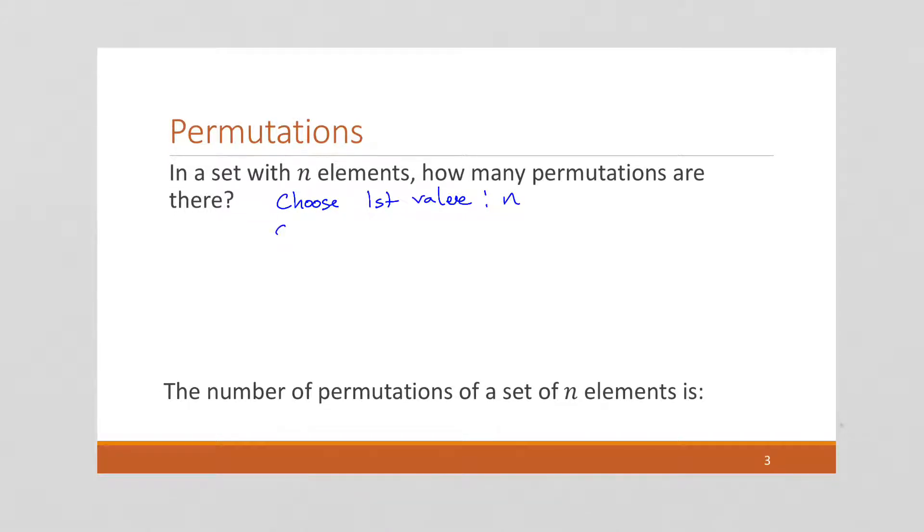To choose the second value, well, we've already taken one, so there's going to be N minus one ways of choosing that second value. We can keep going. We can choose the third value. There's going to be N minus two ways of doing that.